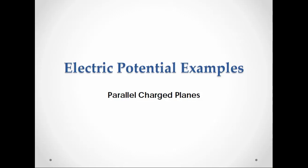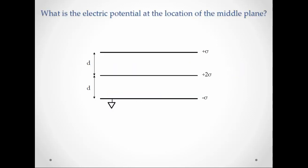So in this example, we're going to look at the electric potential between parallel charge planes. I give you three planes of charge. The top one has charge density plus sigma, the second one is plus two sigma, the third one is minus sigma, and they are separated by distances d and d.